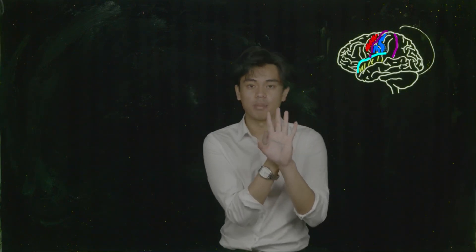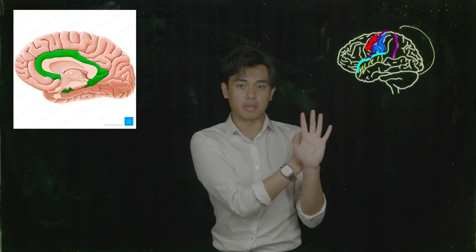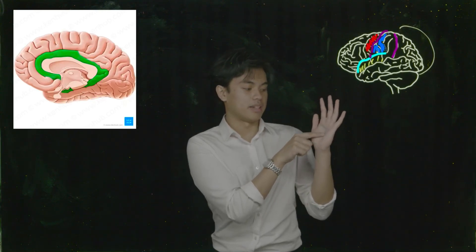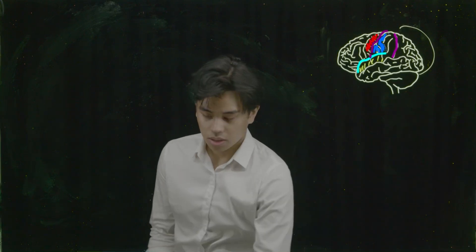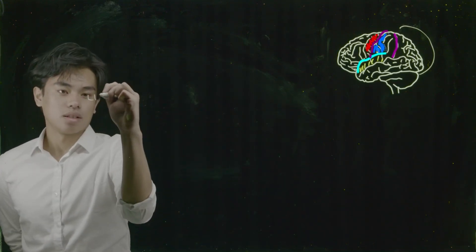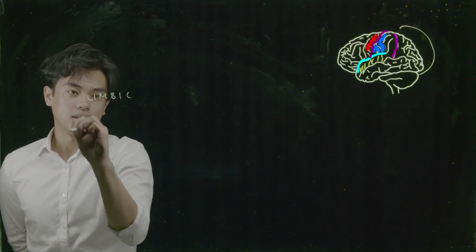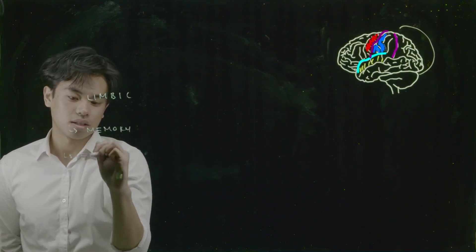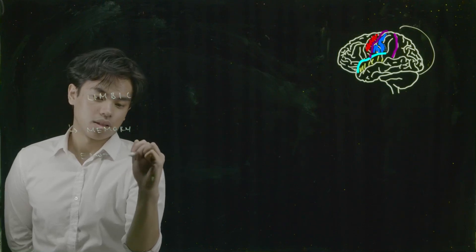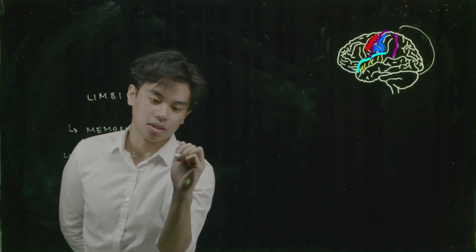There is one more lobe we need to know. Behind the insula, in the most medial compartment of our brain, lies the limbic lobe, represented by the curved line of our palm. Our limbic lobe is interesting because it is responsible for numerous things, including memory, emotional processing, and our ability to learn.